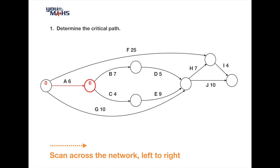Moving left to right, task B has only one line going into its completion circle and takes 7 days, so the best time to reach the end of task B is 13 days. For task C, with only one task to consider, 6 plus 4 gives us a best time of 10 days to the end of that circle.